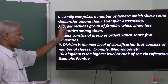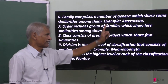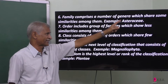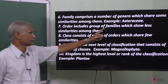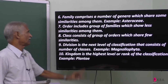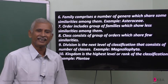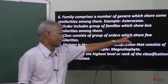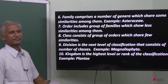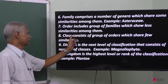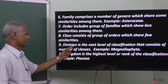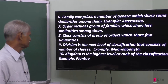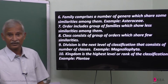Next comes order. In the order, a group of families showing some similarity includes the order. Then a class consists of a group of orders — a number of orders which share few similarities. Similarities in the orders form a class.